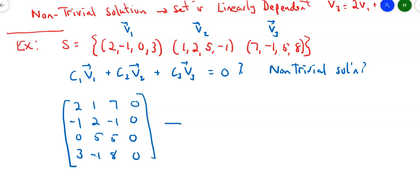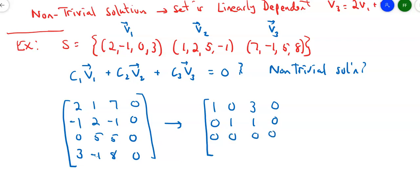Before I started this video, I threw this matrix onto my graphing calculator and did a row reduction. Rather than watch me reduce this — because we've done a lot of row reductions already — I'm just going to tell you what I got. The result was: row 1: 1, 0, 3, 0; row 2: 0, 1, 1, 0; and then two complete rows of zeros.